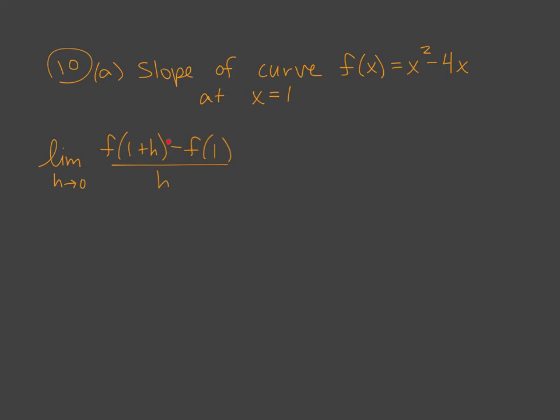So the first thing we're going to do is plug in 1 plus h into our function. And so that looks like squaring it first. So 1 plus h, then it gets squared minus 4 times 1 plus h. So far I've only found this f of 1 plus h. I plugged 1 plus h into our function.